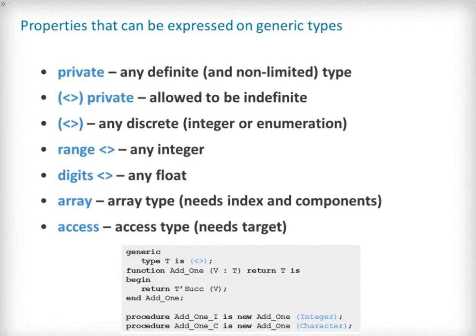The properties of any types in a generic contract provide vital information to the user and the compiler. Here we will look at the properties available to the generic unit author. First of all, it is possible to write a contract for a generic unit that requires private types — both non-limited simple and indefinite private types. It is also possible to specify a generic type with the properties of any discrete type, including integers and enumerations. There is also support for pure integers, floating point types and indeed access types.